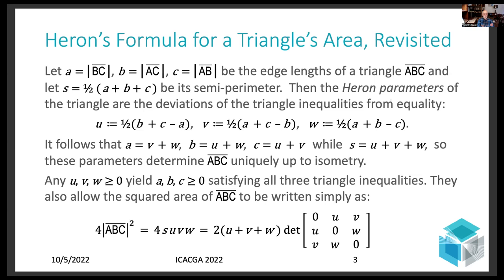In fact, they are somewhat better than that because unlike the edge lengths, the Heron parameters do not have to satisfy the triangle inequality. Any non-negative numbers when treated as Heron parameters will give rise to a triangle where the edge lengths satisfy the triangle inequality. They also allow the squared area of the triangle to be written very simply as the product of the Heron parameters and the semi-perimeter. And that much is pretty well known as a compact way to write Heron's formula.